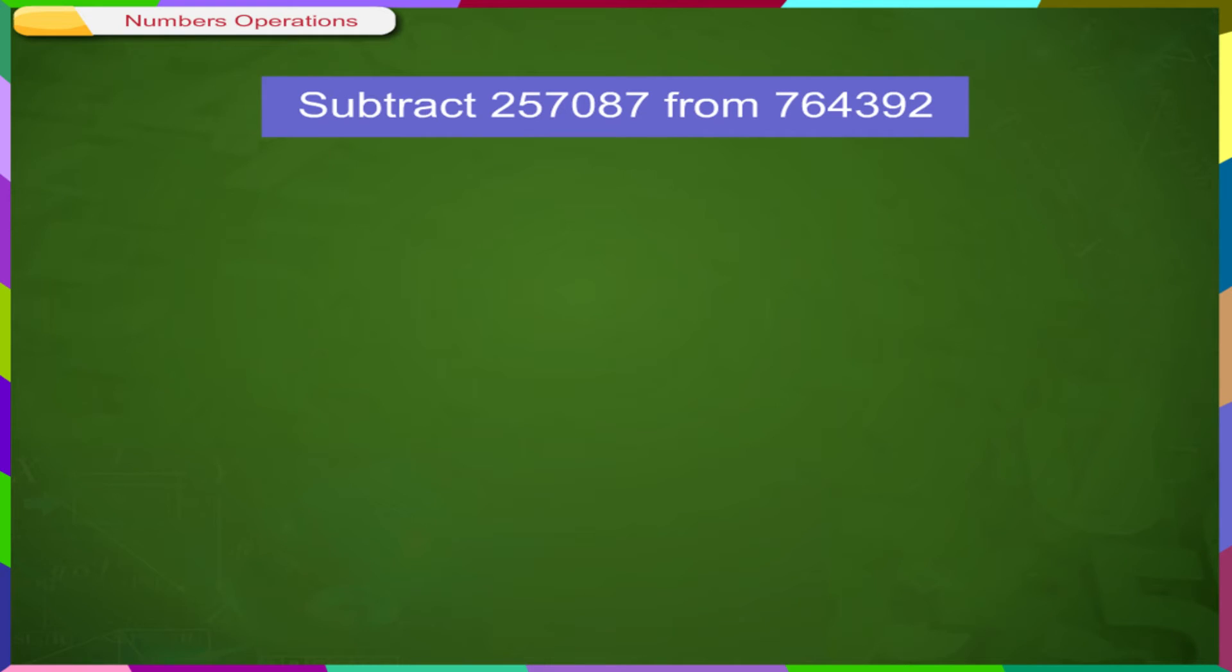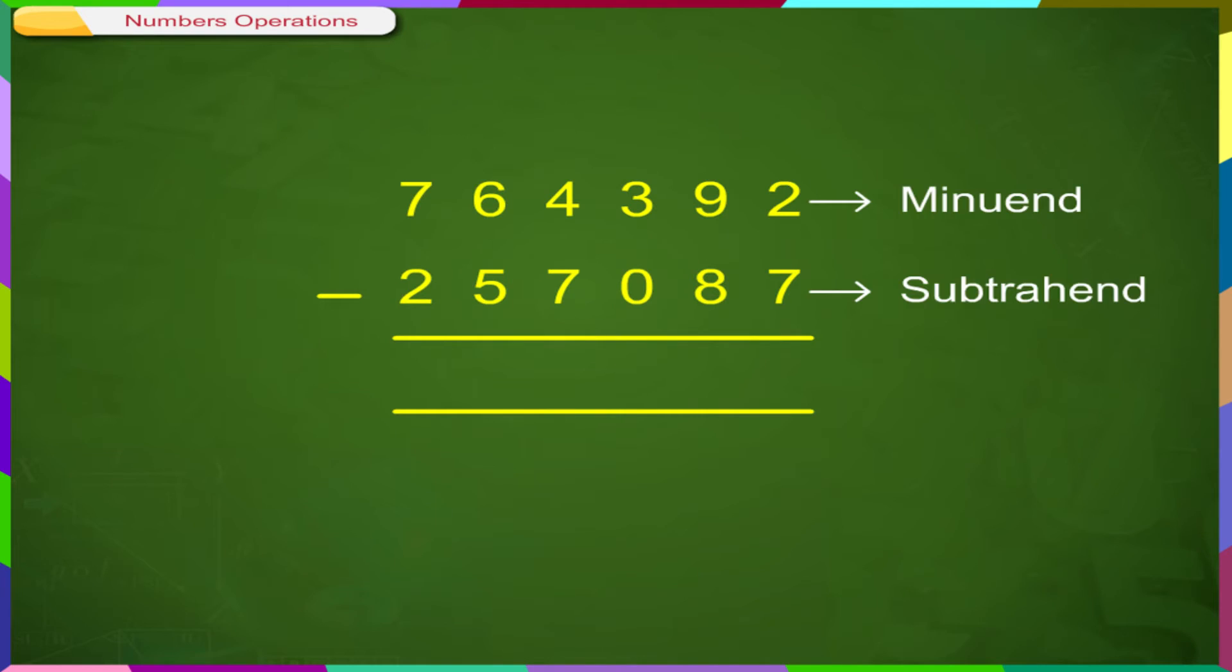Subtract 257087 from 764392. Arrange the digit of the minuend and subtrahend in place value columns and subtract as usual.